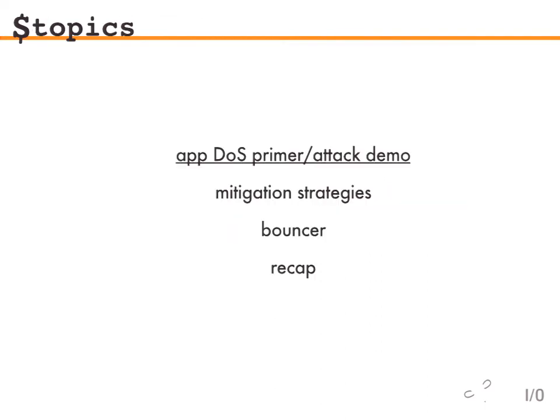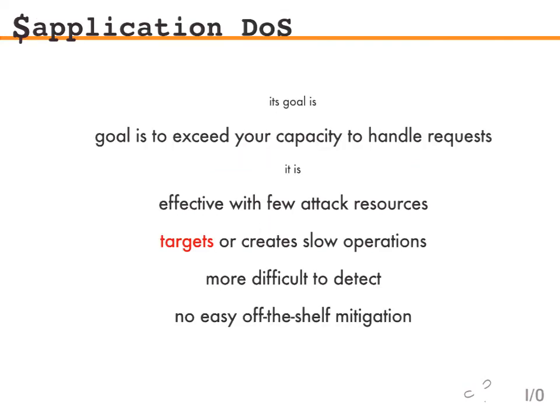Let's talk about an application denial of service attack and take a look at a demo. I think it's important because I don't think a lot of people really know what these look like until they experience one. That was definitely the case at one of my previous companies — we were hit with one and had no idea what was going on. The goal of an application denial of service is to exceed your capacity to handle requests in some form. That's what it boils down to.